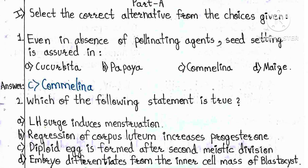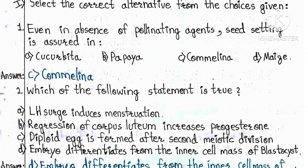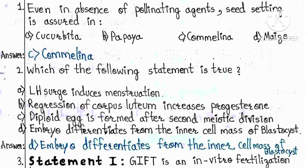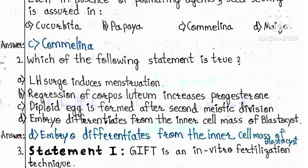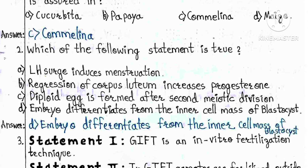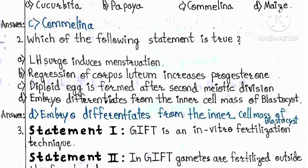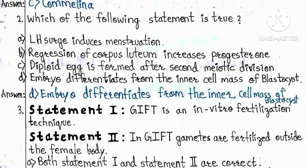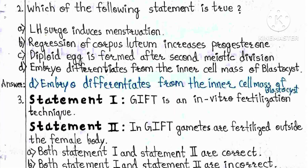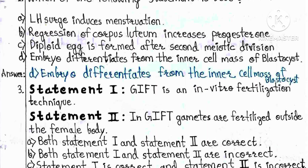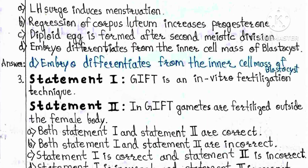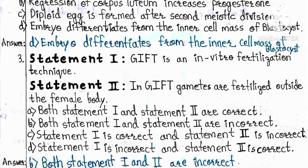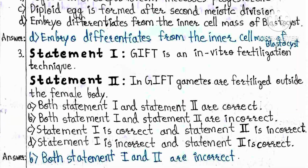Question 2: Which of the following statements is true? A) LH induces menstruation, B) Regulation of corpus luteum increases progesterone, C) Diploid egg is formed after second meiotic division, D) Embryo differentiates from the inner cell mass of blastocyst. The answer is D — embryo differentiates from the inner cell mass of blastocyst.